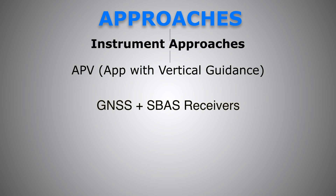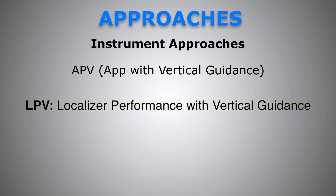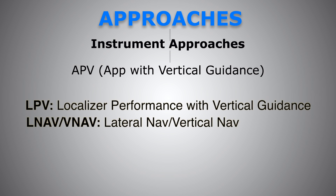SBAS — if you are in the US, that's WAAS, Wide Area Augmentation System. If you are in Europe, EGNOS is the SBAS. India has GAGAN, Japan has MSAS, and so on. These APV approaches include LPV — Localizer Performance with Vertical Guidance — and we also have LNAV/VNAV. APV can get you down to as low as 200 feet AGL, like an ILS, and in certain circumstances even lower than an ILS.